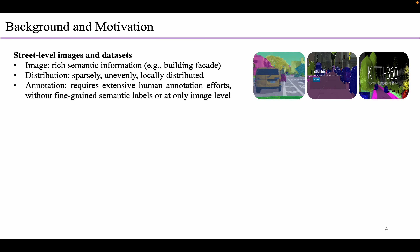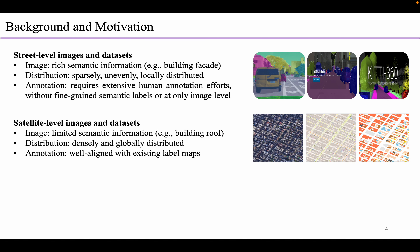Next, I will briefly introduce the background and motivations of Omnicity. The street-level images usually have rich semantic information for conducting complex visual recognition tasks, but the images are sparsely and unevenly distributed along the road regions. For the existing street-level datasets, the annotation process requires extensive human efforts, and the fine-grained semantic labels are not provided or are only at the image level. By contrast, the satellite images usually have fewer semantic information, but the images are densely distributed at a global scale. Unlike the street-level images, the satellite images are well aligned with the existing label maps at pixel level, which can provide various annotations for the visual understanding tasks on satellite images.